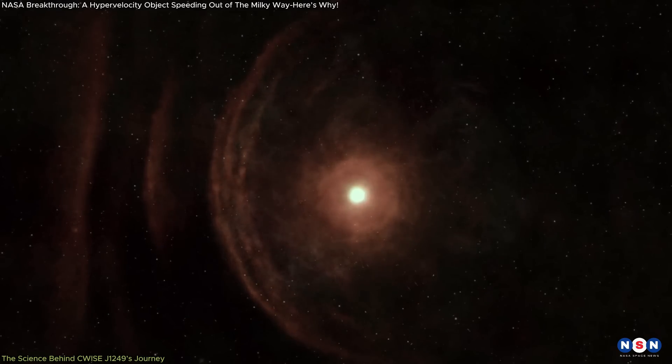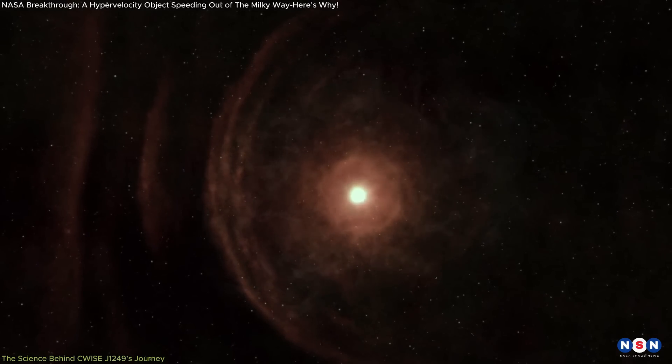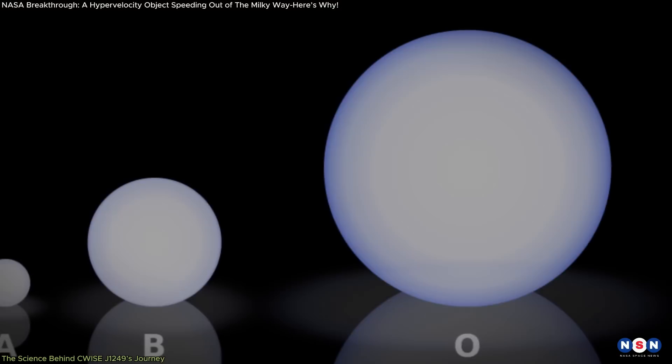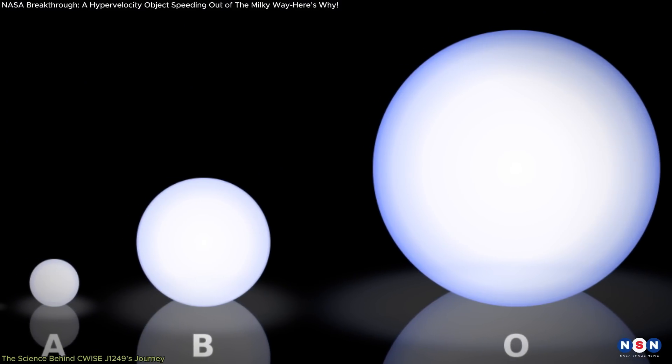However, CWISE J1249 is unique in that it is a low mass object, unlike the massive O and B type stars that were initially found as hypervelocity stars.